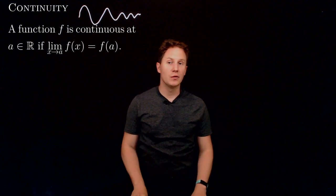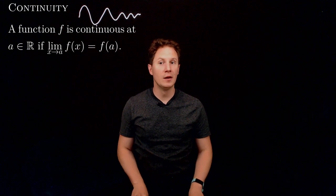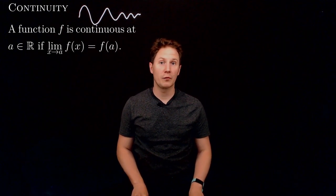Functions whose limits at a point can be found by direct substitution are called continuous at that point. Intuitively, continuous functions are the ones whose entire complete graph you can draw without lifting your pen, so the graph itself is a continuous line. More precisely, we say that a function is continuous at the point a on the number line if the limit as x approaches a of f of x equals f of a.